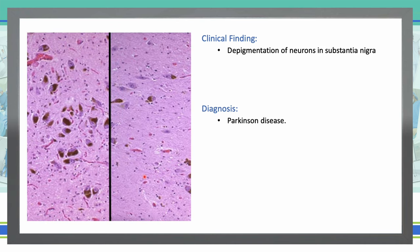Next, depigmentation of neurons in the substantia nigra. The normal substantia nigra has a high number of pigmented neurons — look at how pigmented they are. In Parkinson's disease, we see loss of neurons and loss of pigmentation. Whenever you see depigmentation of neurons in the substantia nigra, it means there is loss of pigment and loss of neurons — that is Parkinson's disease.